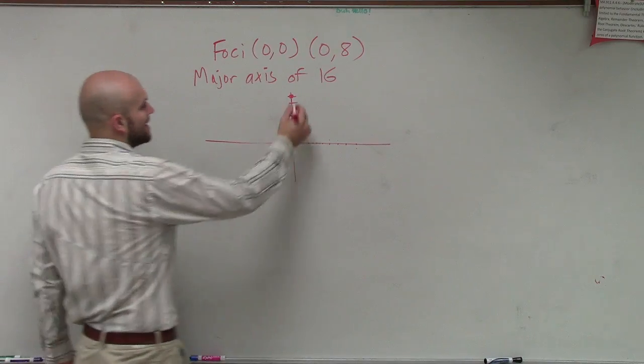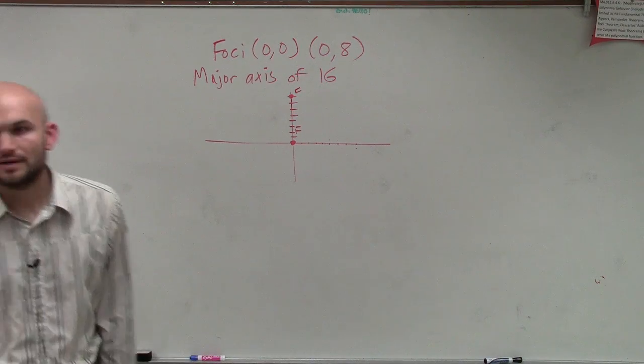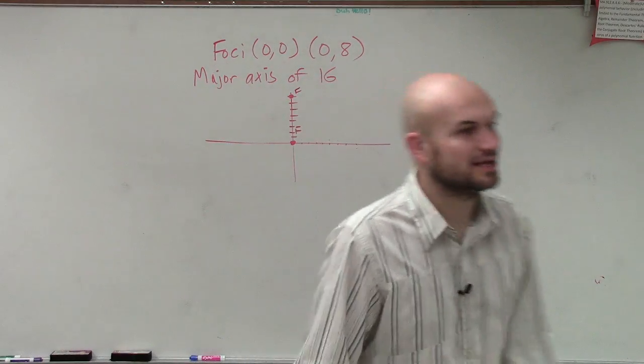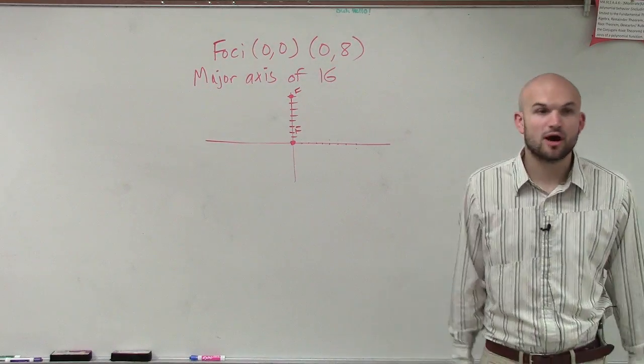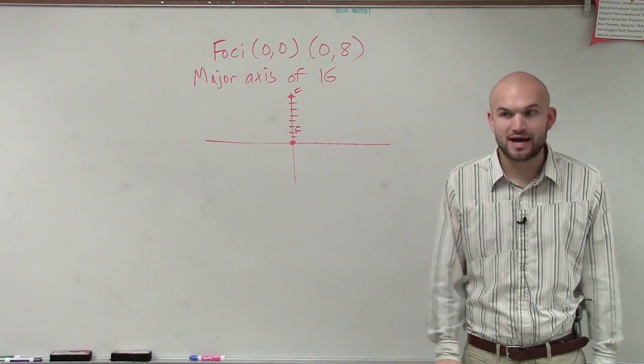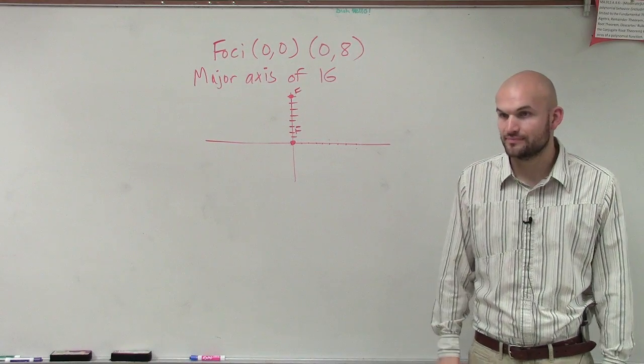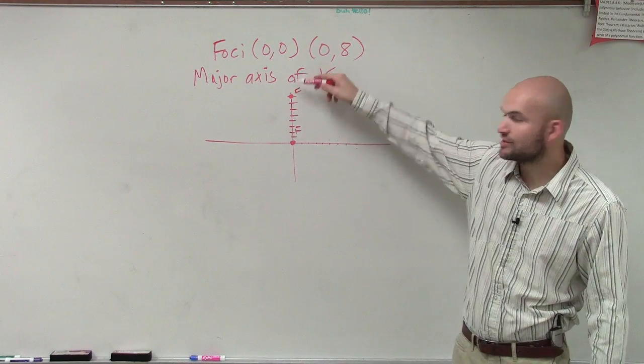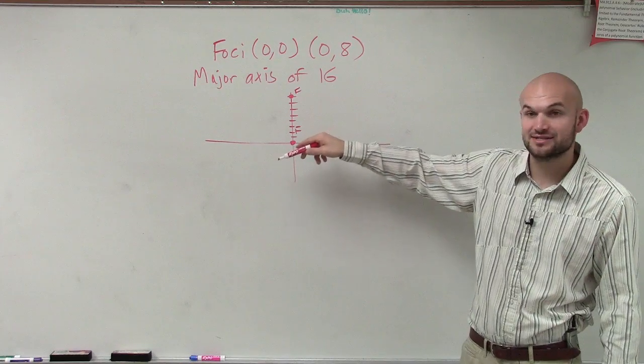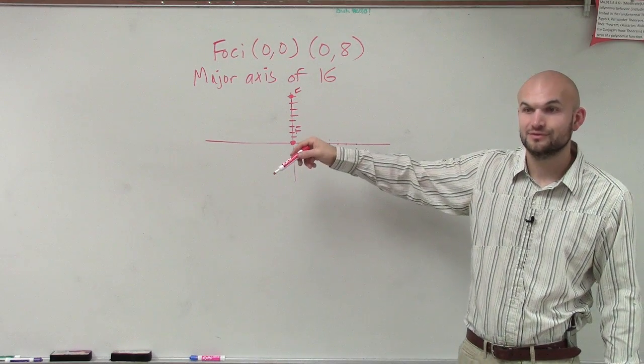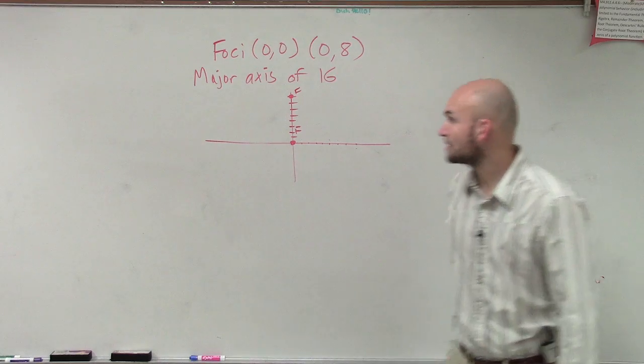So, we have two foci's, right? Now, knowing your understanding of ellipses, remember our foci's have to lie on our major axis, right? So, therefore, here is our major axis. So, therefore, is our major axis going to be vertical or horizontal? Vertical. Vertical, right?